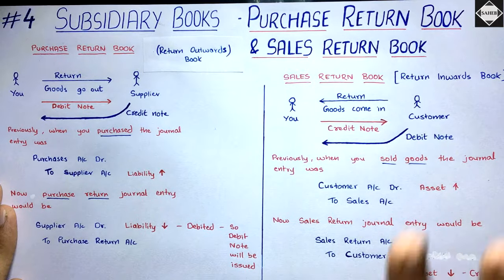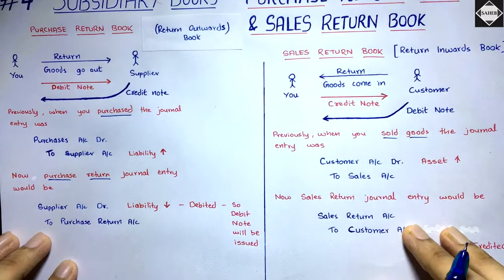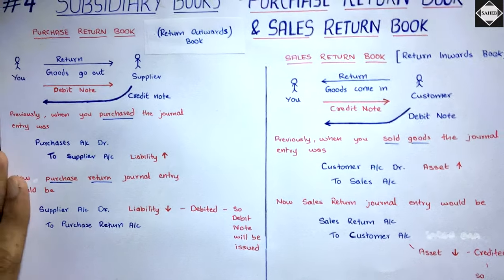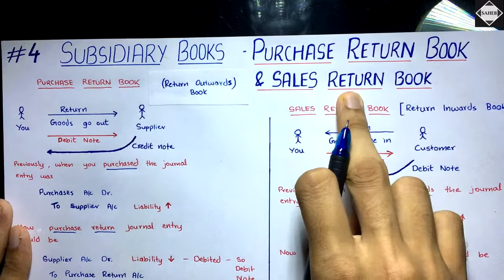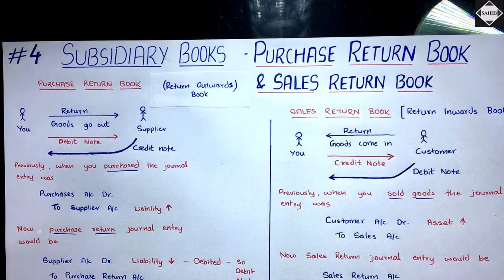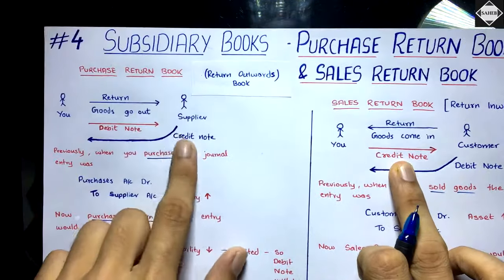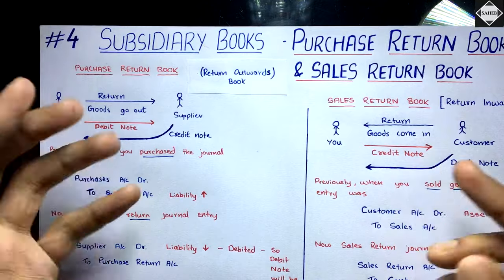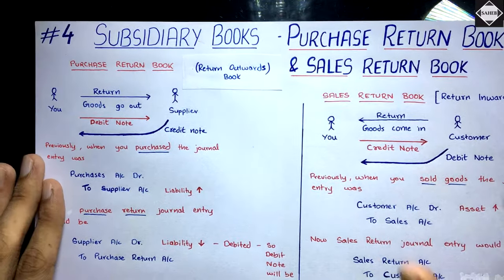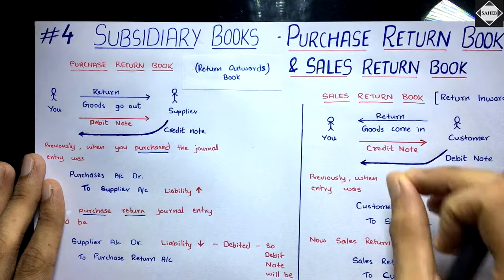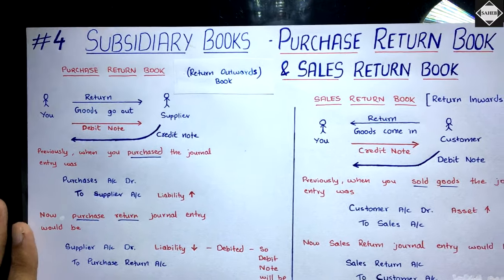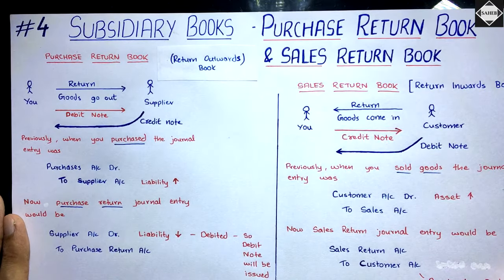Now let's directly go to the subsidiary books problems of purchase return and sales return. It's exactly like purchase book and sales book with a little difference — a separate column is there for credit note or debit note number, since these are the source documents to record these transactions. That's the format; that's all you need to know.